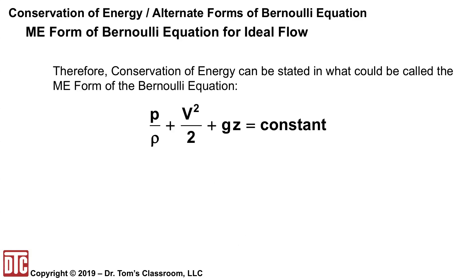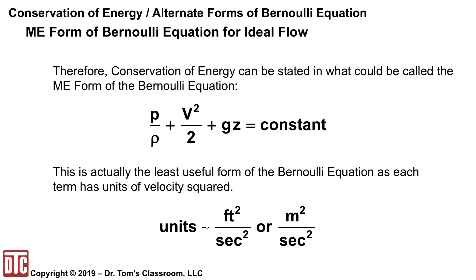This is what I call the ME form of the equation. It's probably the least useful of the three forms because each term has units of velocity squared — it just doesn't work as easily as the other two. I use the CE form as a default, and for certain kinds of problems the AE form is very appropriate.